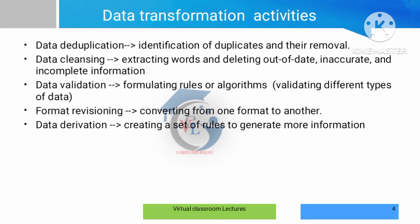Cleansing is preprocessing — it handles out-of-date, inaccurate, and incomplete information to produce complete and correct data. Data validation ensures that data is present and valid. For example, if there is a date of birth field and the person is 23 years old, but the calculated age from the date shows 25 years, then it is not valid data.